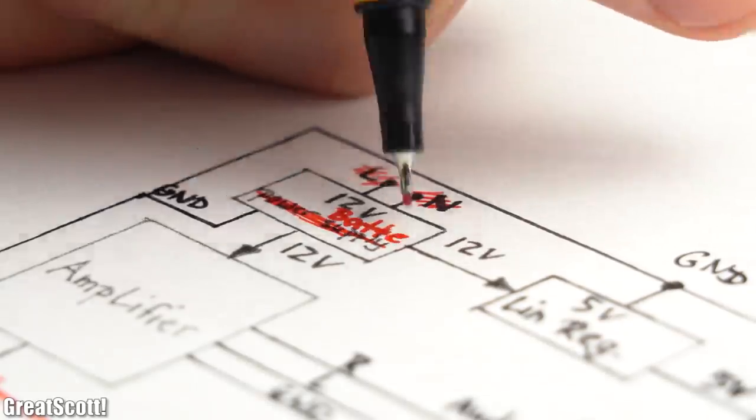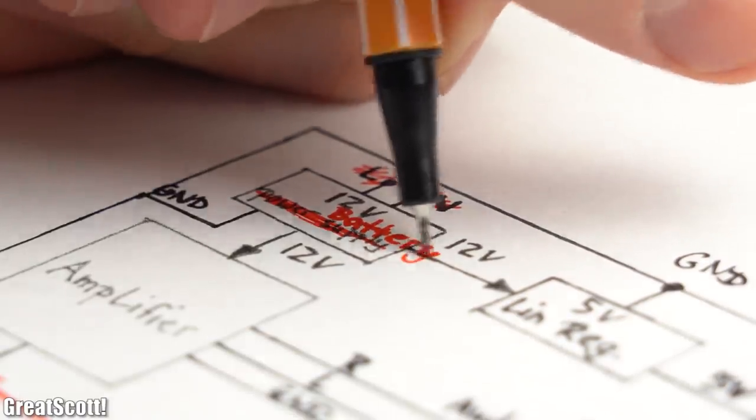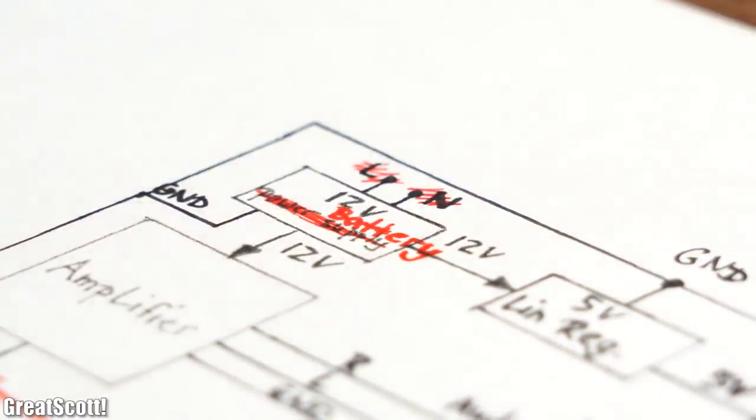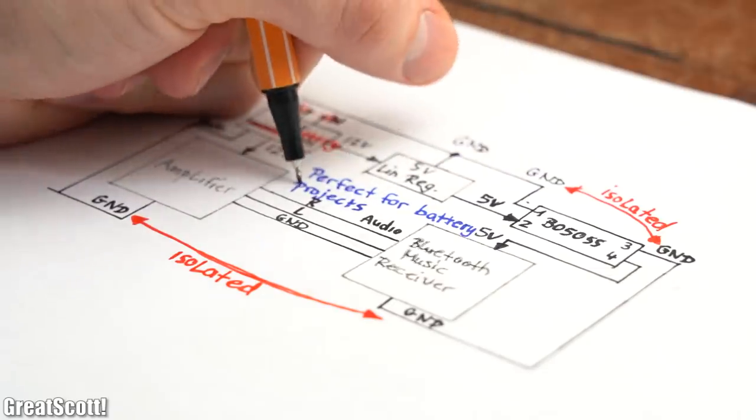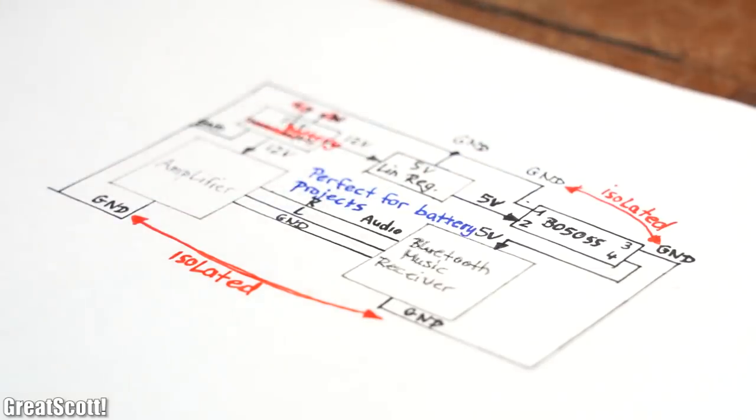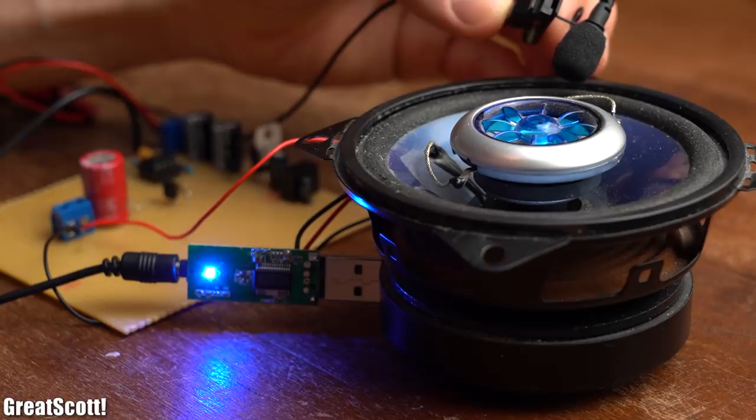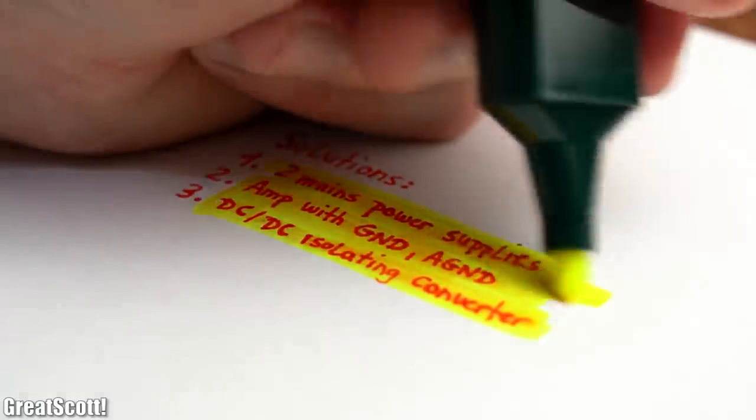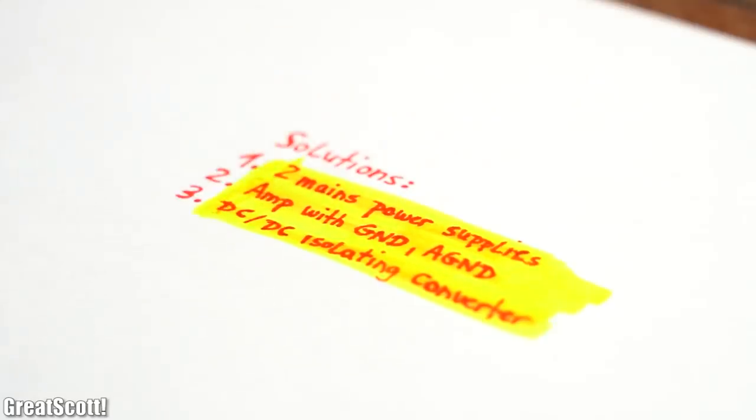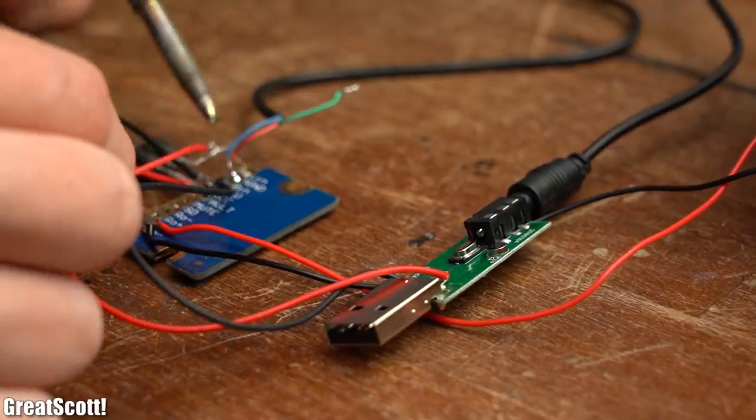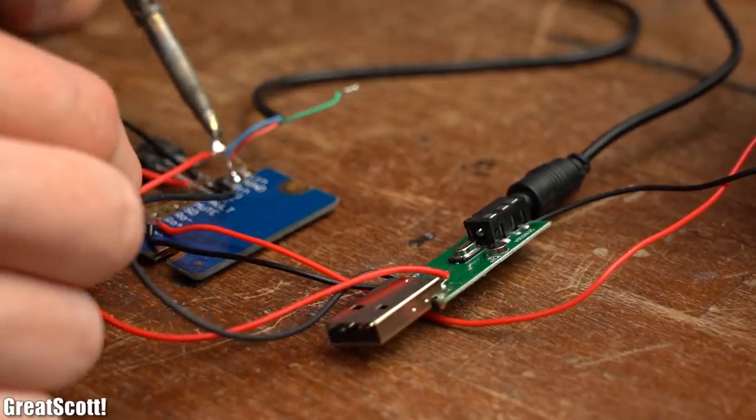And of course, if you are using battery power, then two mains adapters would not be possible and you would have to use this solution as a replacement. And as you can hear, the interference sounds are gone with this solution. And I hope that you learned a thing or two through this video and maybe even use some of its ideas in your own upcoming projects.